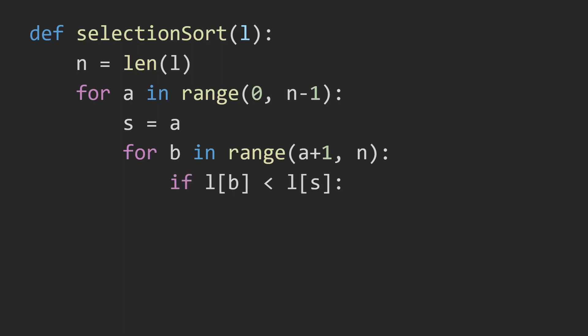If the number that B is at is smaller than the number that S is at, then S is equal to B. And then we swap the contents at A and S.